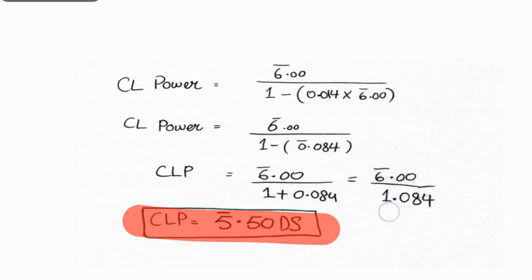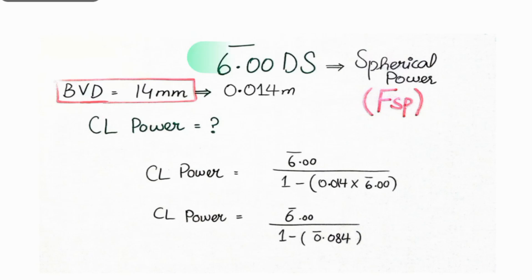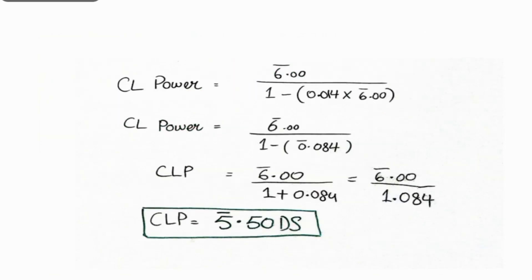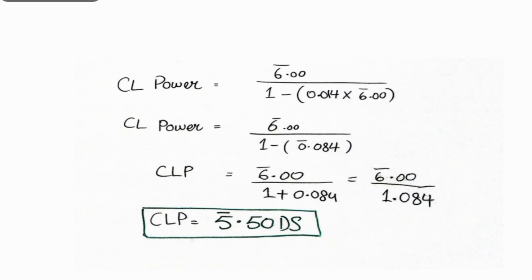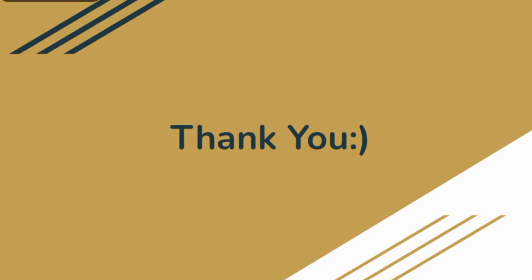So the contact lens power is minus 5.5 diopters sphere. The patient was using a spherical spectacle power of minus 6 diopters, but the contact lens power should be minus 5.5 diopters sphere. This is how you convert spherical spectacle power into the contact lens prescription. The same applies for plus power. In case of any query, comment in the comment section — thank you so much.